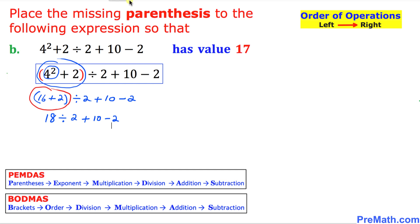And now next, we are going to take care of this part, the division part. 18 divided by 2 is 9 plus 10 minus 2.